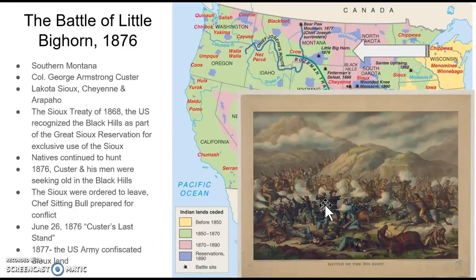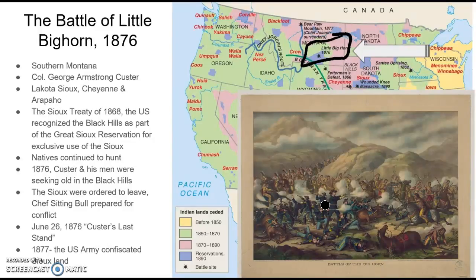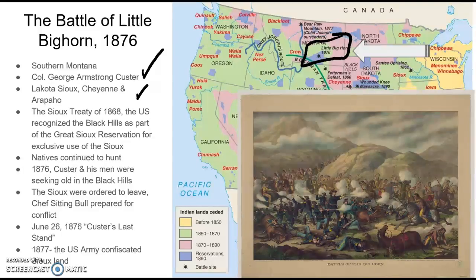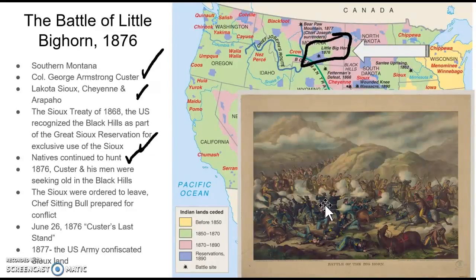The next major event is the Battle of Little Bighorn, which takes place in southern Montana. It involves George Armstrong Custer — another individual in search of gold and glory — along with the Lakota Sioux, the Cheyenne, and the Arapaho. In 1868, the U.S. government signed the Sioux Treaty of 1868, recognizing the Black Hills as part of the Great Sioux Reservation for the exclusive use of the Sioux. The Native Americans continued to use that land as their own, which was rightfully true. However, in 1876, Custer and his men were seeking gold in the Black Hills, and when gold was found, they ordered the Sioux to leave.